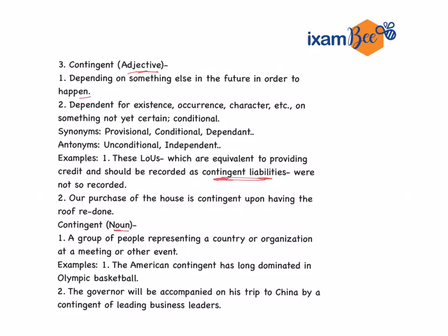Second example: a purchase of the house is contingent upon having the roof repaired — if the roof is repaired, then we will purchase it. As a noun, contingent means a group of people representing a country or organization at a meeting or event. For example, the American contingent has long dominated Olympic basketball. The governor will be accompanied on his trip to China by a contingent of leading business leaders. As an adjective, synonyms are provisional, conditional, dependent; antonyms are unconditional and independent.